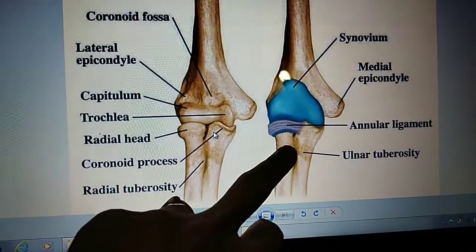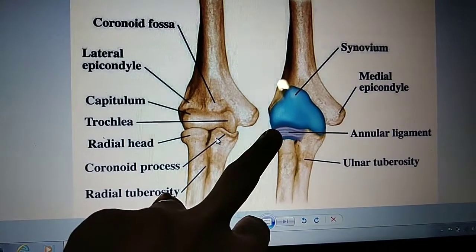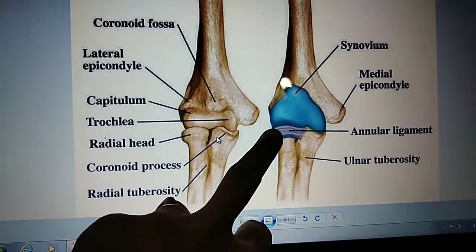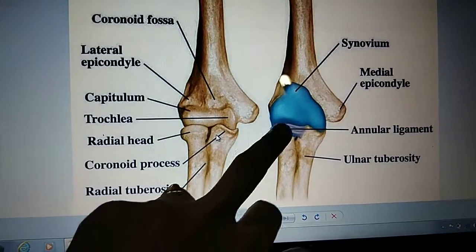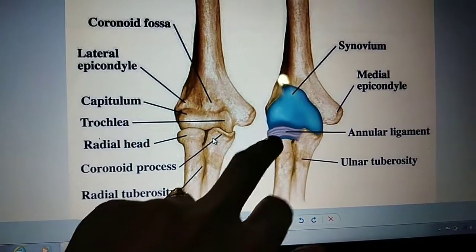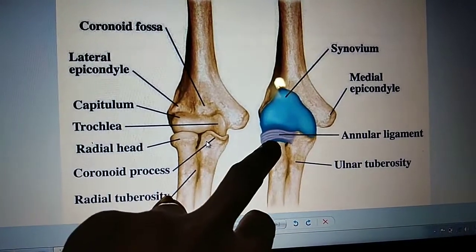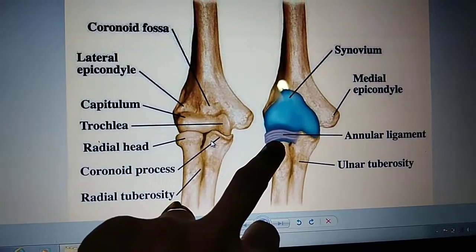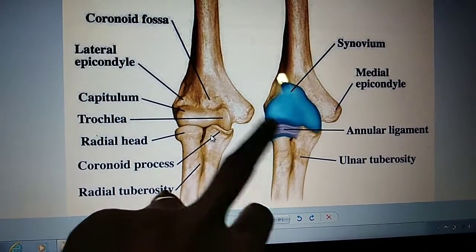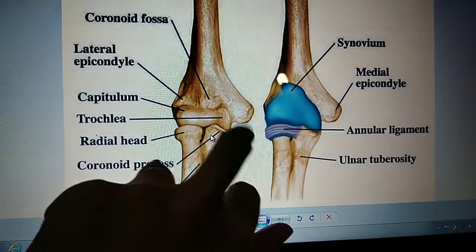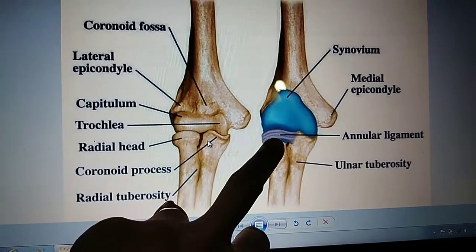The annular ligament joins the radius with the ulna. From a clinical perspective, children can slip out of this annular ligament, resulting in what we call a pulled elbow — a subluxation around the head of the radius.